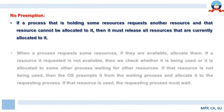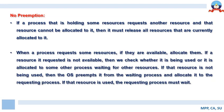For no preemption: if a process holding some resource requests another resource and that resource cannot be allocated to it, then it must release all resources currently allocated to it. Furthermore, when a process requests resources and they are available, allocate them. If a requested resource is not available, check whether it is allocated to some other process waiting for another resource.